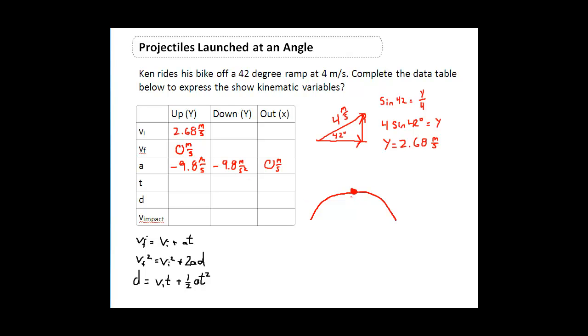So upwards, we do have a final velocity of 0 meters per second. Now at that point, he's going to start traveling downward again. He's going to start traveling downward and he's going to hit the ground over here. Well, when he hits the ground over there, he will be now traveling with the same velocity that he started off with, 2.68 meters per second.